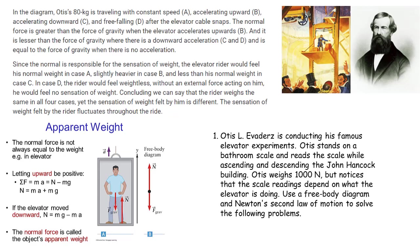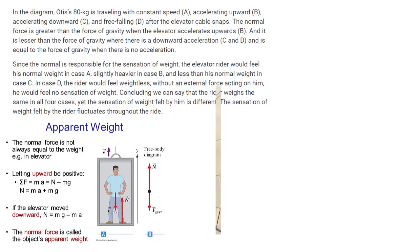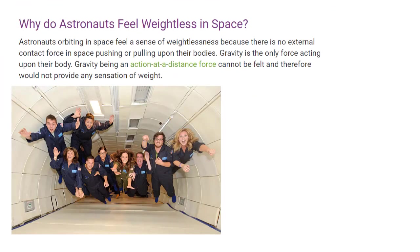Since the normal is responsible for the sensation of weight, the elevator rider would feel his normal weight in case A, slightly heavier in case B, and less than his normal weight in case C. In case D, the rider would feel weightless, without an external force acting on him, he would feel no sensation of weight. Concluding we can say that the rider weighs the same in all four cases, yet the sensation of weight felt by him is different. The sensation of weight felt by the rider fluctuates throughout the ride.